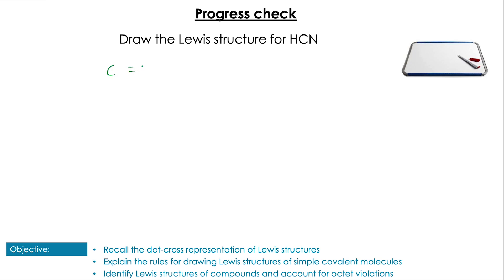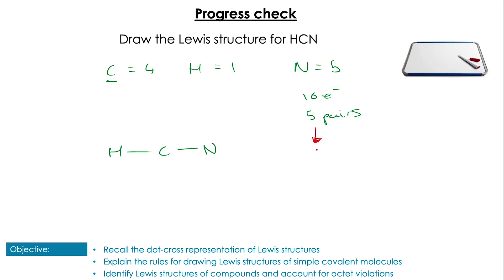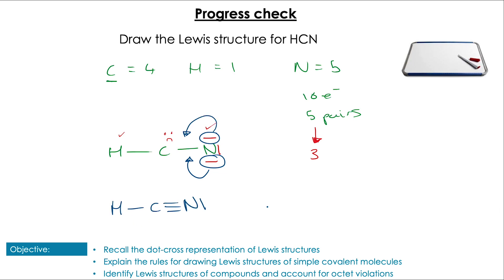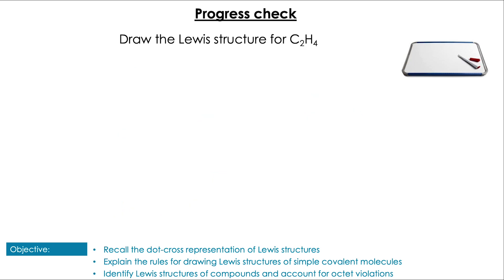Next question: draw the Lewis structure for HCN. Pause the video to have a go. Totalling the electrons gives us 10 electrons, or five pairs. Carbon, being the least electronegative, goes in the center with nitrogen and hydrogen around it, leaving three pairs remaining. Placing those around nitrogen, we see two of our three atoms are happy, but the carbon in the center can only see four electrons. So we move two of those lone pairs off nitrogen into a bond between nitrogen and carbon, forming a triple bond between carbon and nitrogen, with one lone pair left on nitrogen.